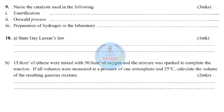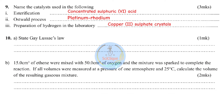Question nine: name the catalysts used in the following processes. Esterification — an alkanol reacts with an alkanoic acid to produce an ester and water — catalyst: concentrated sulfuric acid. Ostwald process — industrial manufacture of nitric acid — catalyst: platinum-rhodium catalyst. Preparation of hydrogen in the lab using zinc and hydrochloric acid — a small amount of copper(II) sulfate can be added to speed up the reaction.